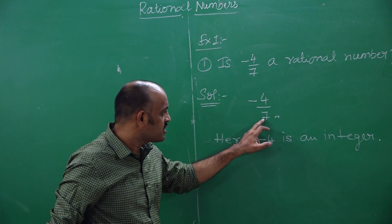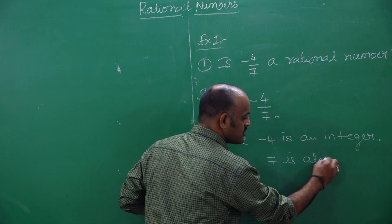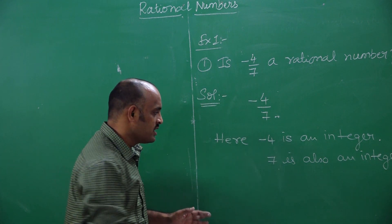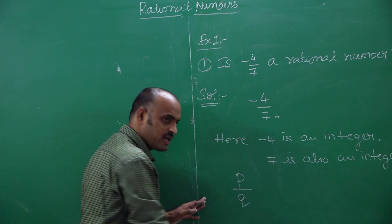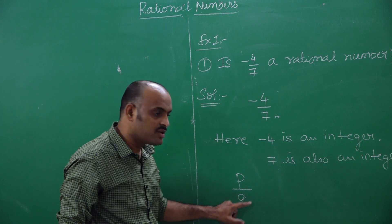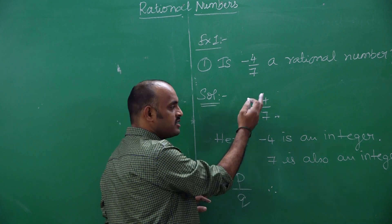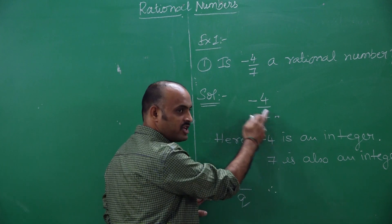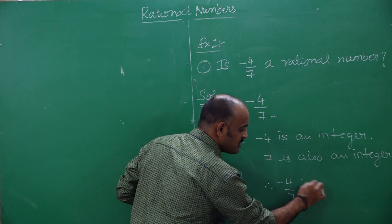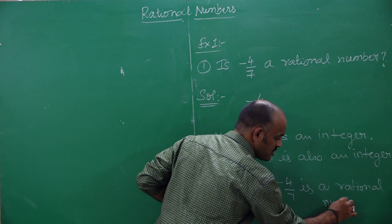And if you see the denominator, is 7 an integer? Yes, 7 is also an integer. So according to the definition, any number in the form of p by q where p and q are integers and q is not equal to 0 is a rational number. Therefore, minus 4 by 7 is a rational number.